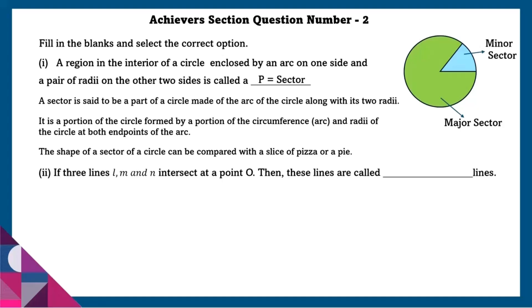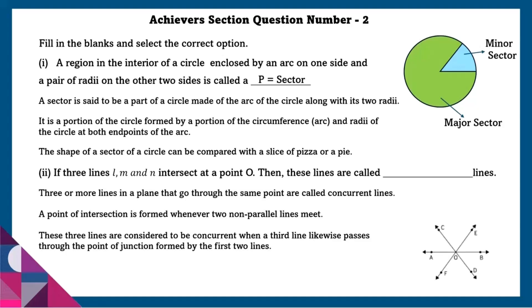Second: if three lines L, M, and N intersect at a point O, then these lines are called concurrent lines. Three or more lines in a plane that go through the same point are called concurrent lines. A point of intersection is formed when two non-parallel lines meet, and they are considered concurrent when a third line also passes through that point of junction.